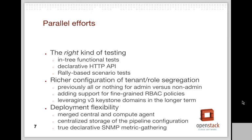On tenant segregation: currently Ceilometer has an all-or-nothing model — admin users are omniscient and can see everything, while normal users can only see data associated with resources they own. We want a more nuanced model using OpenStack's role-based access control and Keystone's forward-looking features like domains, so the administrative role can be partitioned between different groups of users rather than being globally absolute.